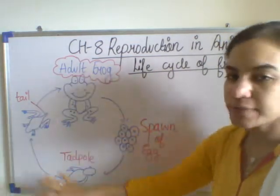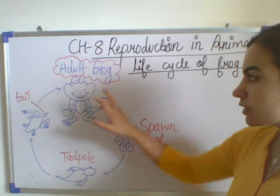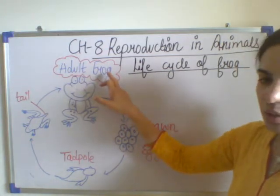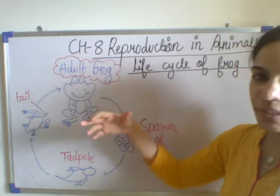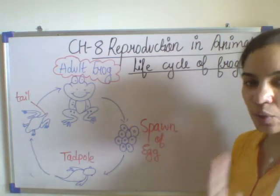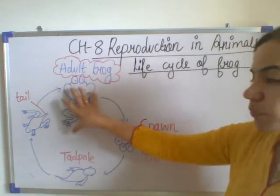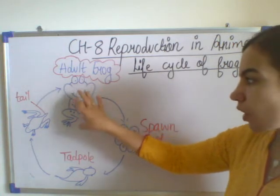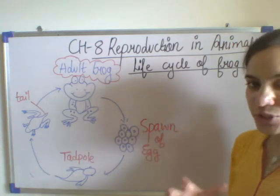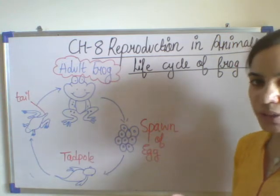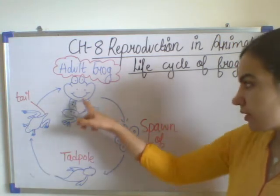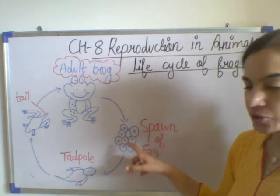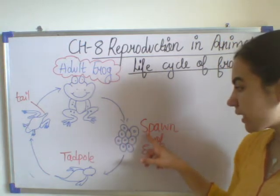Here I have drawn a life cycle of a frog. First we can see this is the adult frog — adult means grown up. This frog lays a cluster of eggs. Cluster means a group of eggs. This group of eggs is called a spawn.